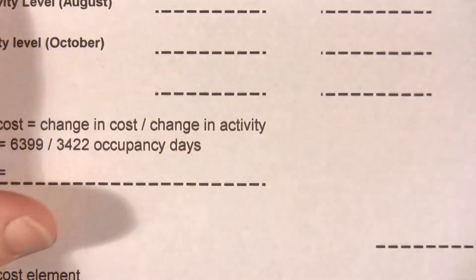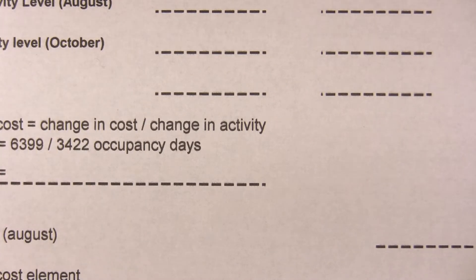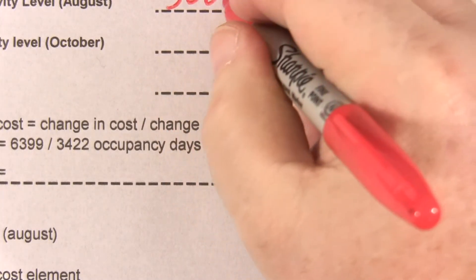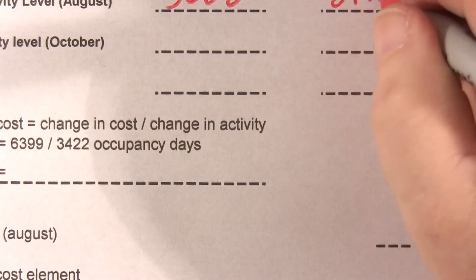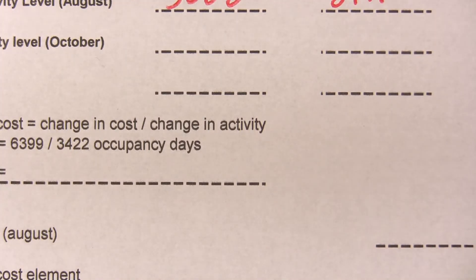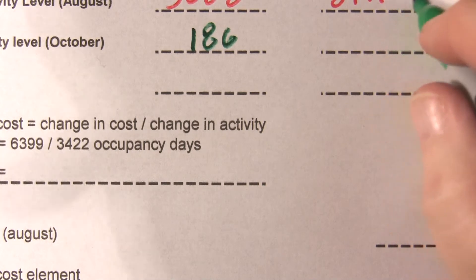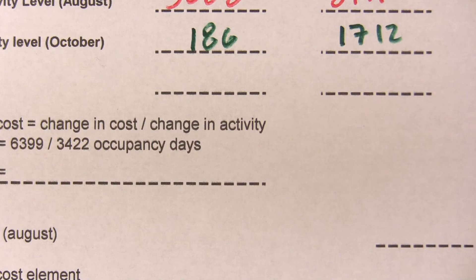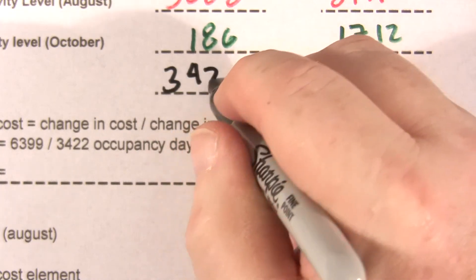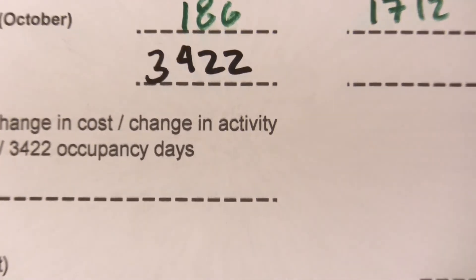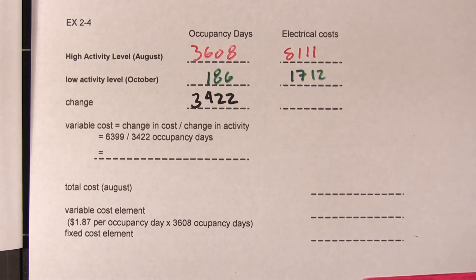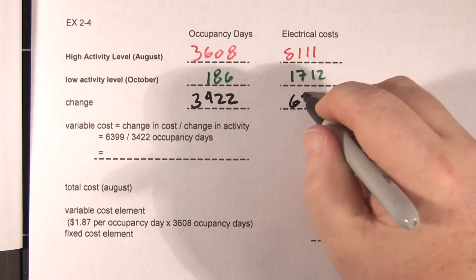At our high level, which was August, we had 3,608 days and our cost for those days was $8,111. Our low level was October — during October we had 186 days and our electrical costs were $1,712. So our change in occupancy days is 3,422, and for those additional 3,422 days it cost us $6,399.